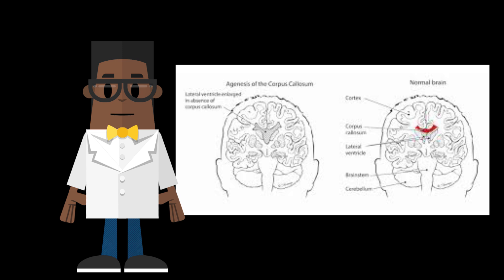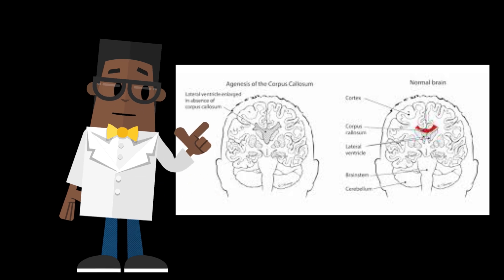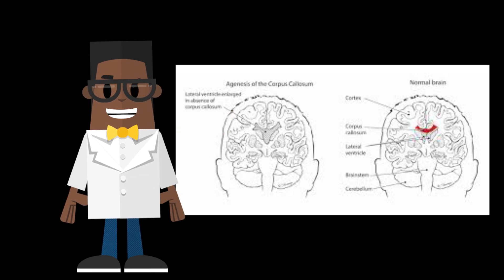Scientists were able to further understand the necessity of transferring information from one hemisphere to the other by studying patients with damage or improper formation of the corpus callosum, forming the split-brain model, in which the two hemispheres had to function separately from one another.